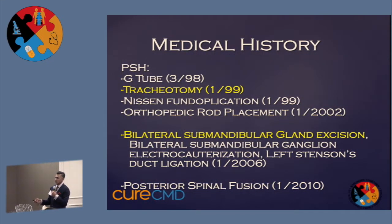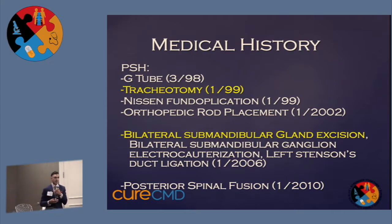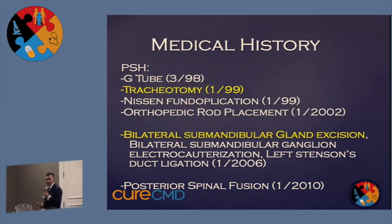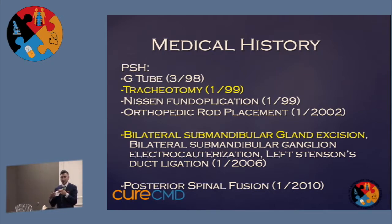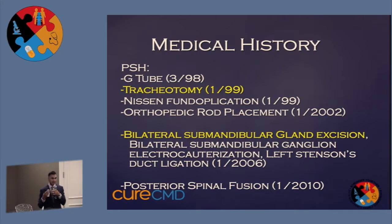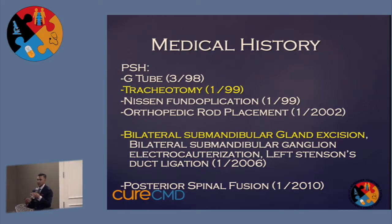Her surgical history was quite complex. Obviously, a tracheotomy in 1999, G-tube placement — all results of the lack of skeletal function. She also had some procedures prior to me by our ear, nose and throat team, where she had her submandibular glands removed — because of the excessive drooling and inability to handle saliva secretions — in efforts to combat that problem. Those glands exist below the bone of the jaw and produce our saliva to lubricate foods normally. I believe there were also some Botox applications to help minimize the production of saliva.